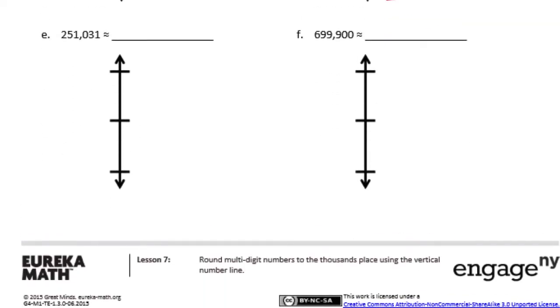E, 251,031. So 251,000 and 252,000. This would be 251,500 right in the middle. And 251,031, this is just barely bigger than 251,000. So it really would go not even where my first mark is. I'm going to put it really close. 251,031. So we're going to round down to 251,000.